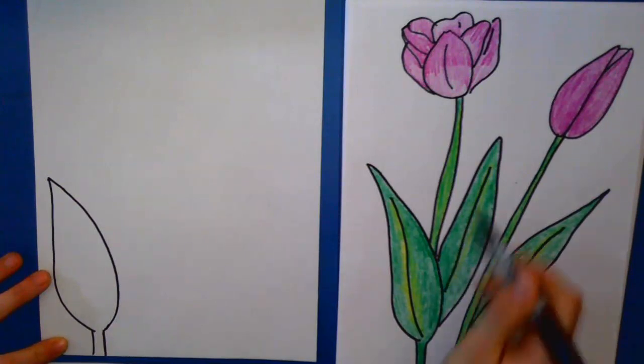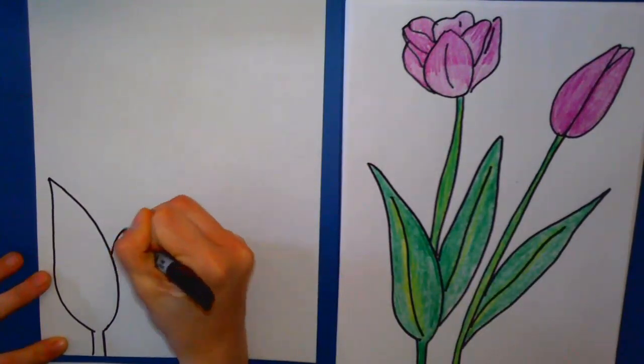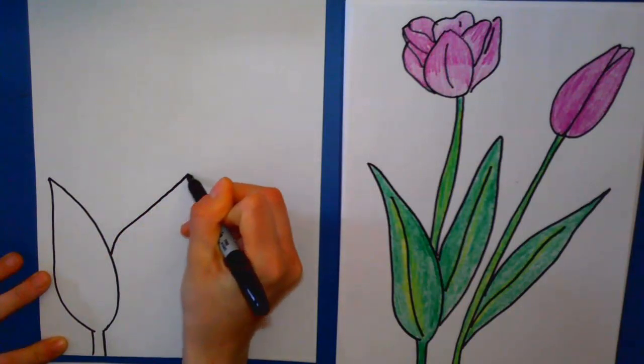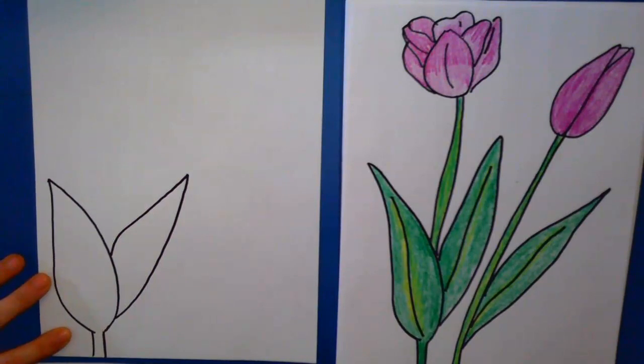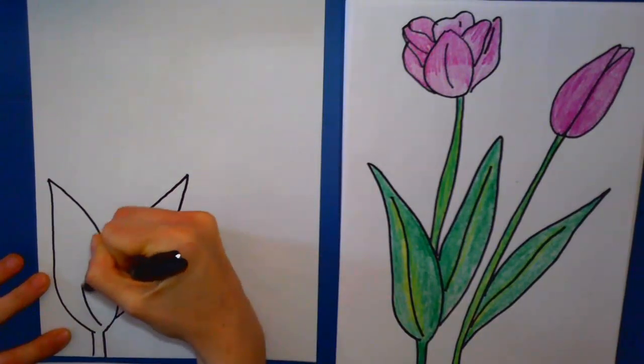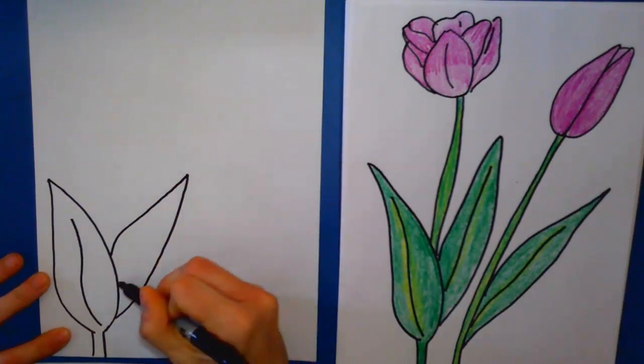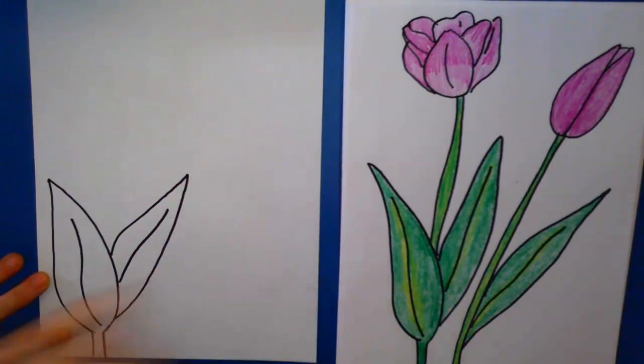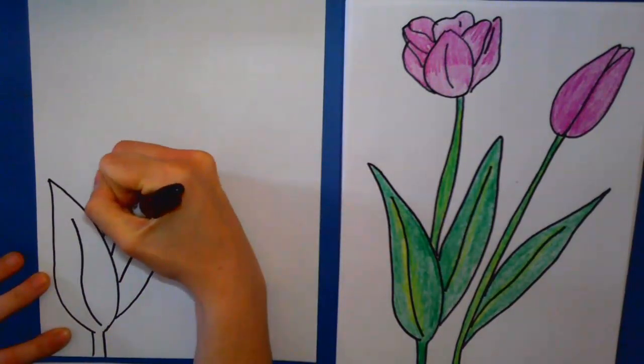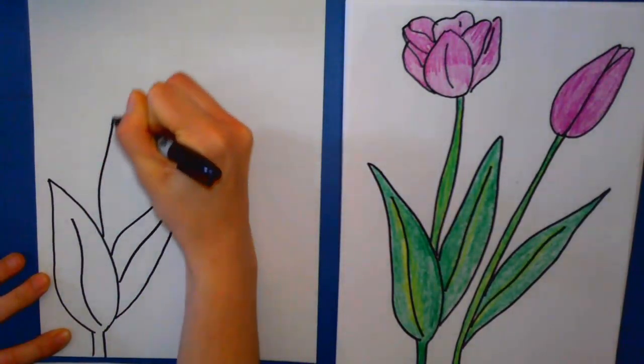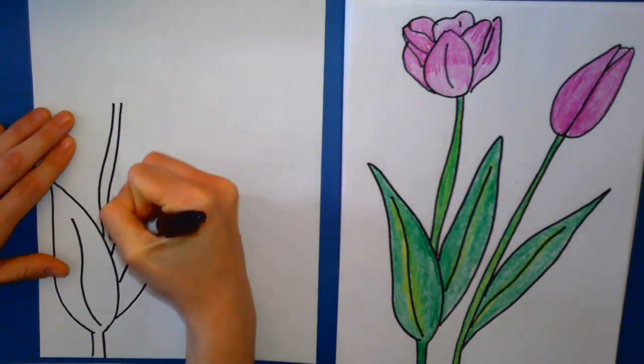Now we're gonna draw this one to look like it's slightly behind the one we just drew. So you're gonna go up to a point, back down, and around, and then just a line that kind of follows the shape of the outside of what you just drew into both of those. Now we're gonna keep going with the stem. So it'll line up, you can add a slight curve to it, and then do the same thing on the other side.